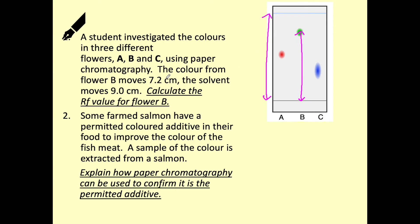So the color from flower B has moved 7.2 centimeters and our solvent has moved 9 centimeters. So to calculate the RF value, we would then do 7.2 divided by 9. And because our units are the same, they're going to cancel. So we should always make sure that the prefixes to these units are the same so that they cancel out.